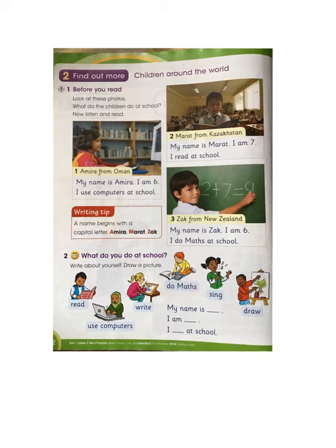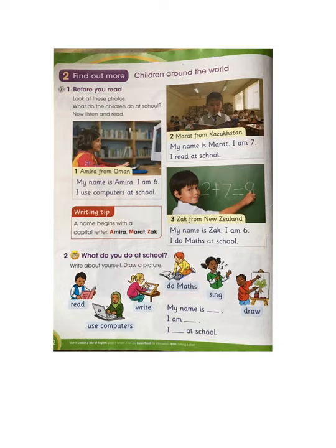Let's see what Amaira does. My name is Amaira. I am 6. I use computers at school. Marat: My name is Marat. I am 7. I read at school. Zach: My name is Zach. I am 6. I do maths at school.